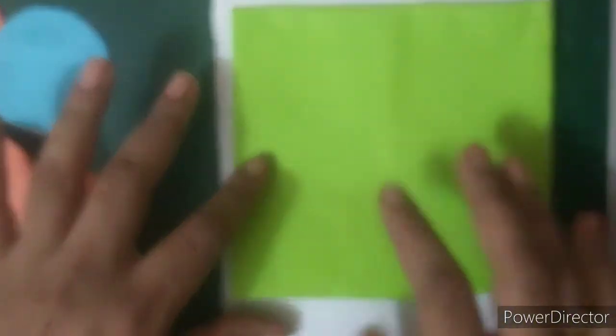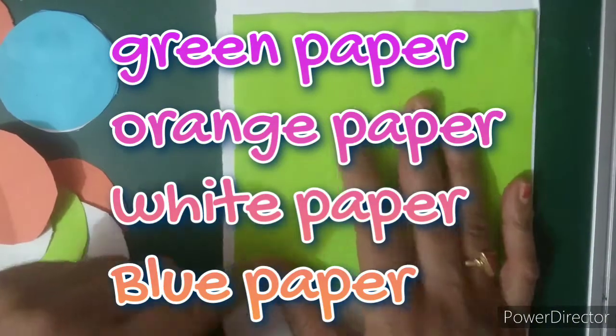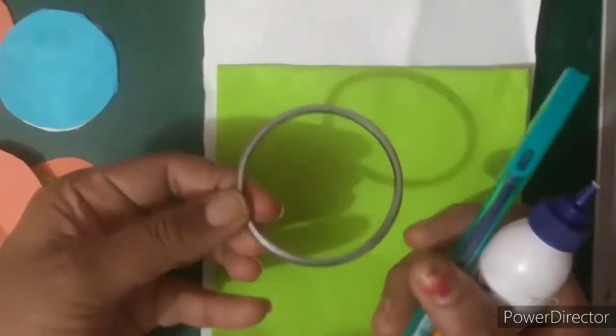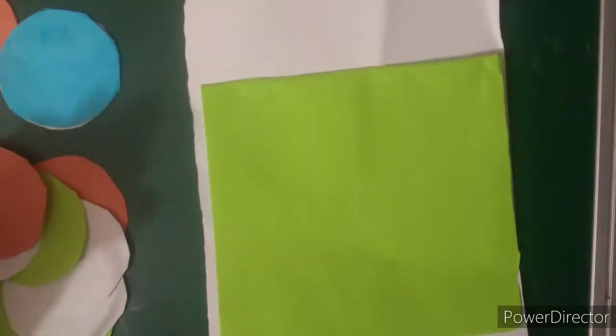For that we will require a green sheet, orange sheet, white sheet, then blue sheet, fevicol, a pen, a circular shape or any bangle, and a scissor, that's it.